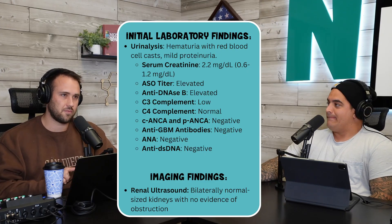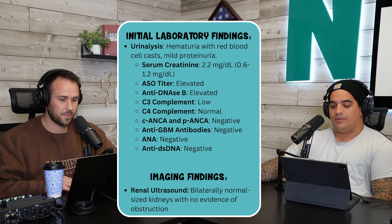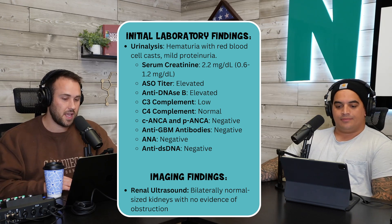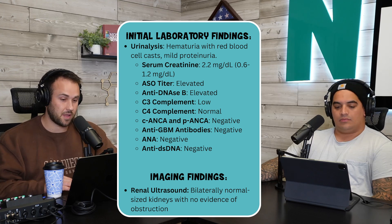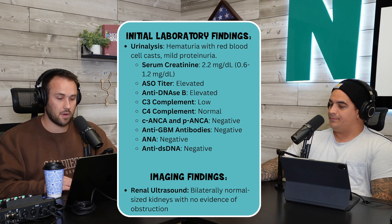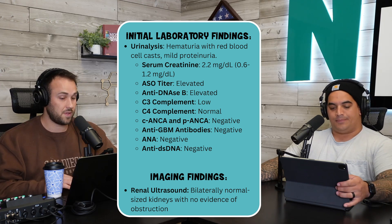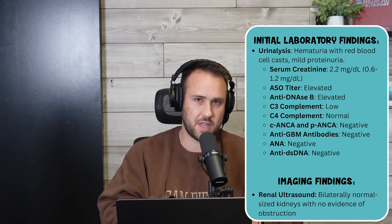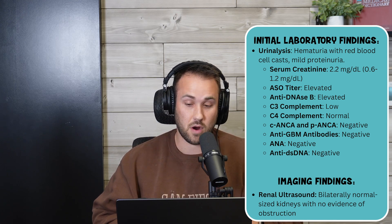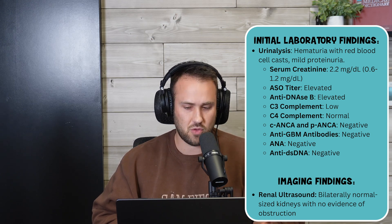Starting with the urinalysis: we see hematuria with red blood cell casts and mild proteinuria. Additional testing: serum creatinine is 2.2, ASO titer is elevated, anti-DNase B is elevated. C3 complement is low, C4 complement is normal. C-ANCA and P-ANCA are both negative. Anti-GBM antibodies are negative. ANA is negative. Anti-double-stranded DNA is negative. The renal ultrasound shows bilaterally normal-sized kidneys with no evidence of obstruction. With all that information, what is the diagnosis?